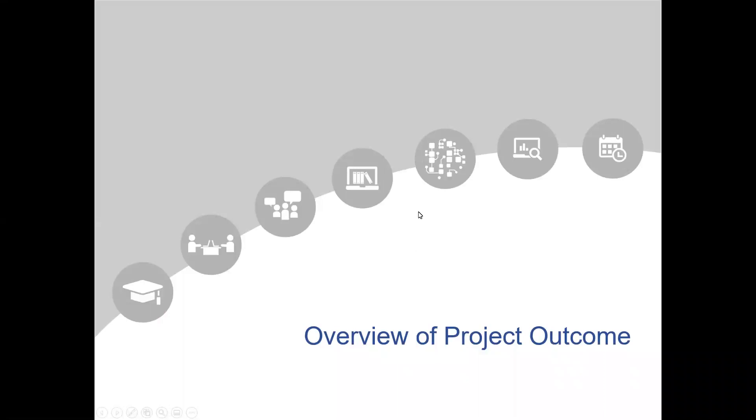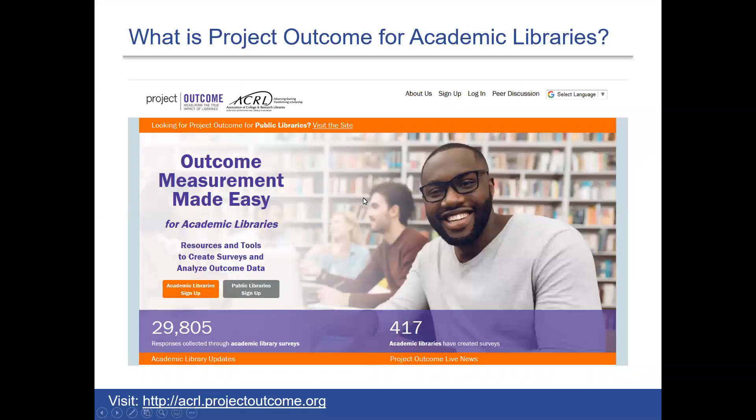To start with a quick overview of what Project Outcome is and what it does: Project Outcome for Academic Libraries is an online toolkit for academic and research librarians and LIS students. It's designed to help academic libraries understand and share the impact of essential library services and programs. It's based on a set of simple surveys and an easy-to-use process for measuring and analyzing outcomes. We also provide libraries with resources and training support to help them apply their results and advocate for their library's future.